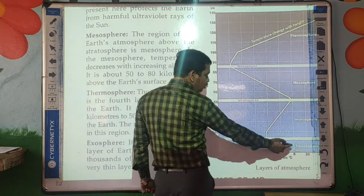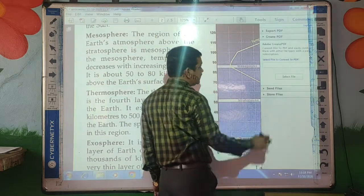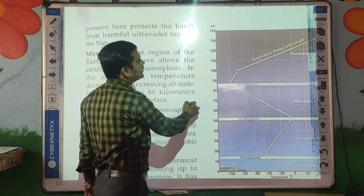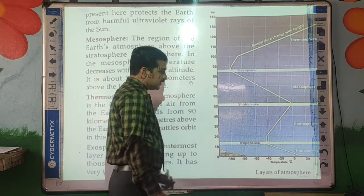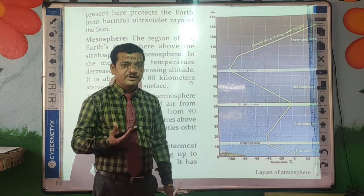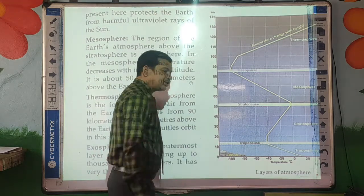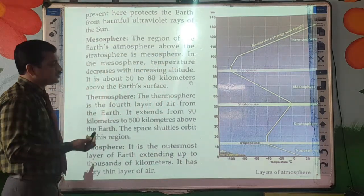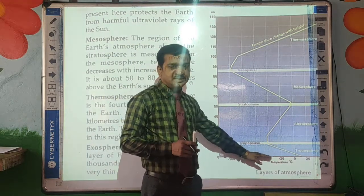The first layer is the Troposphere. All living organisms exist in this region. This Troposphere extends from 0 to 10 km from the Earth. It is the lowermost or first layer of the atmosphere, and mostly vegetation is present in this region.